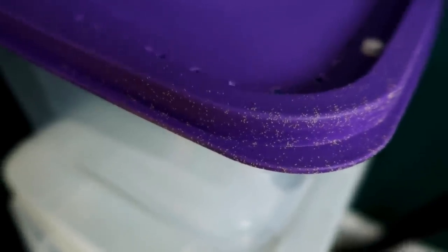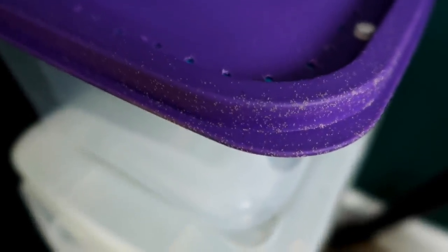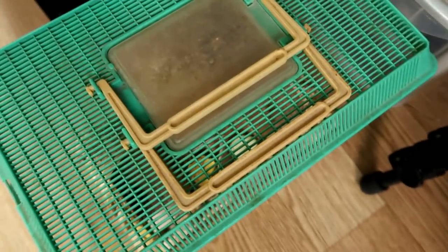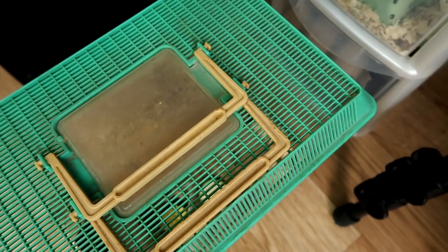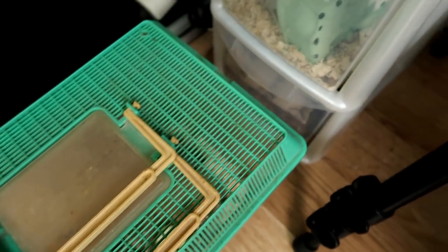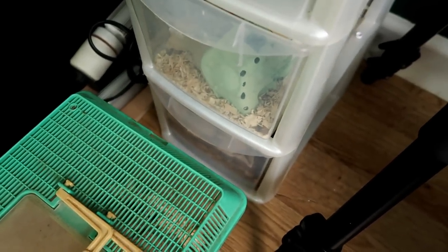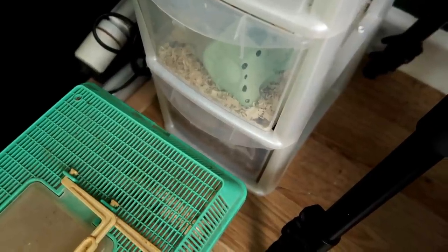Look, they're absolutely everywhere. Now the only thing I've introduced in this room are new crickets, and I can only assume if it is grain mites, it might have come from them, which means it's probably got into my morio worms and my mealworm breeding colony.